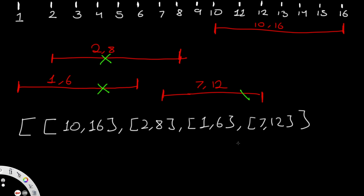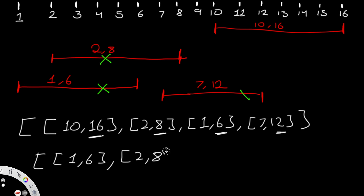We're given the list of start and end values of each balloon. I want to show how we can sort our list in a way that makes it easier to find whether something is in a specific interval. We're going to sort these values according to the final ending value. The smallest ending value is 6, so first we have 1 comma 6, then 2 comma 8, then 7 comma 12, and finally 10 comma 16.